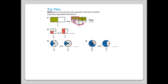Let's look at number 2: are one-fourth and one-half equivalent fractions? One-fourth and one-half are not equivalent fractions. Number 3: are two-sixths and two-eighths equivalent fractions? Two-sixths and two-eighths are not equivalent fractions. Number 4: are eight-twelfths and four-sixths equivalent fractions? Yes, eight-twelfths and four-sixths are equivalent fractions.